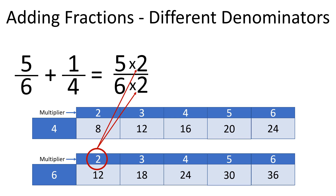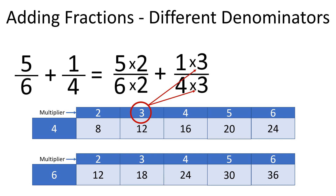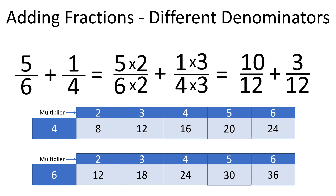The denominator in the second fraction needs to be multiplied by three to have twelve. As we multiply the denominator by three, we have to multiply the numerator by three as well. Five times two is ten; six times two is twelve — giving us ten over twelve for the first fraction. One times three is three; four times three is twelve, so we have three over twelve for the second fraction.